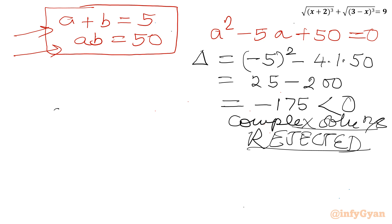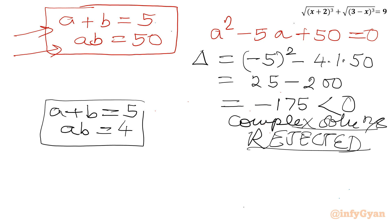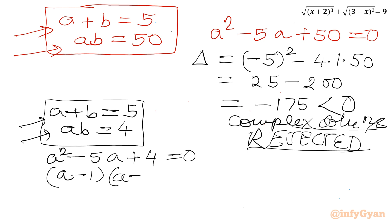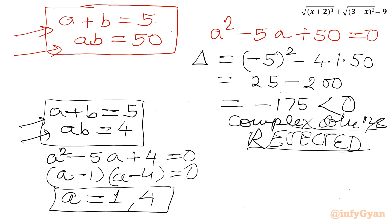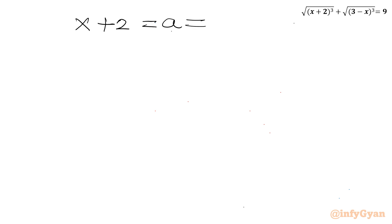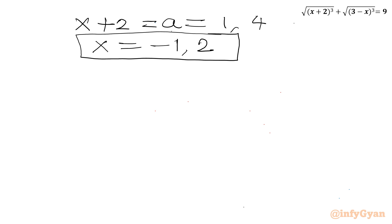Now for System 1, a+b=5 and ab=4: we form the quadratic a² − 5a + 4 = 0. Factoring gives (a−1)(a−4) = 0, so a = 1 or a = 4. Since a was our substitution for (x+2), we have x+2 = 1 giving x = −1, and x+2 = 4 giving x = 2. These are our real solutions.